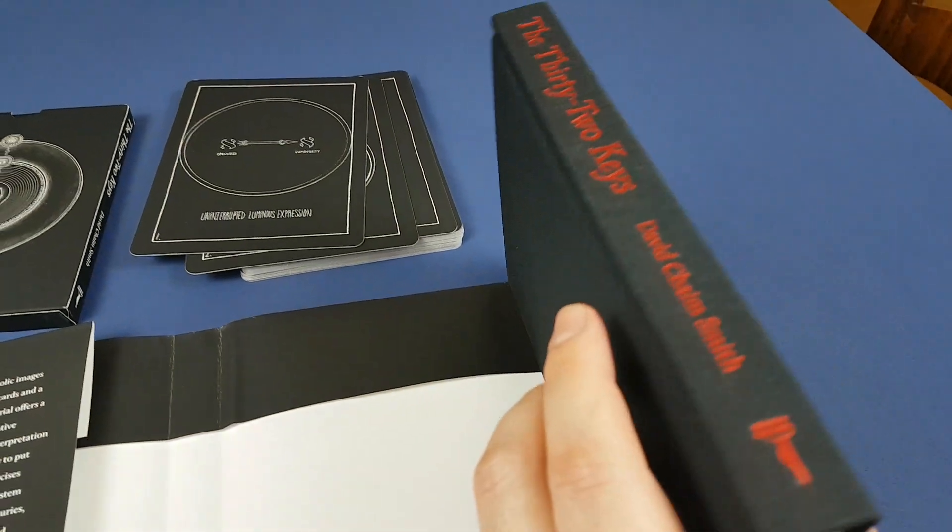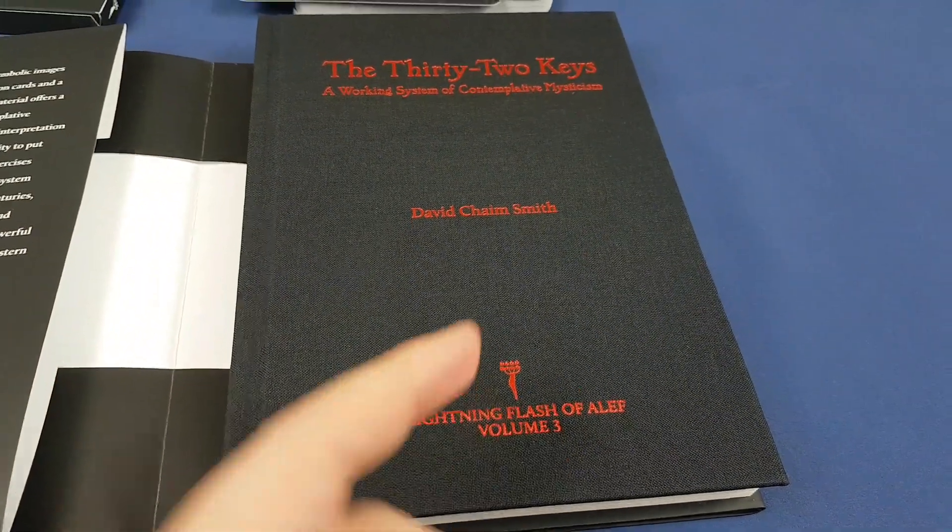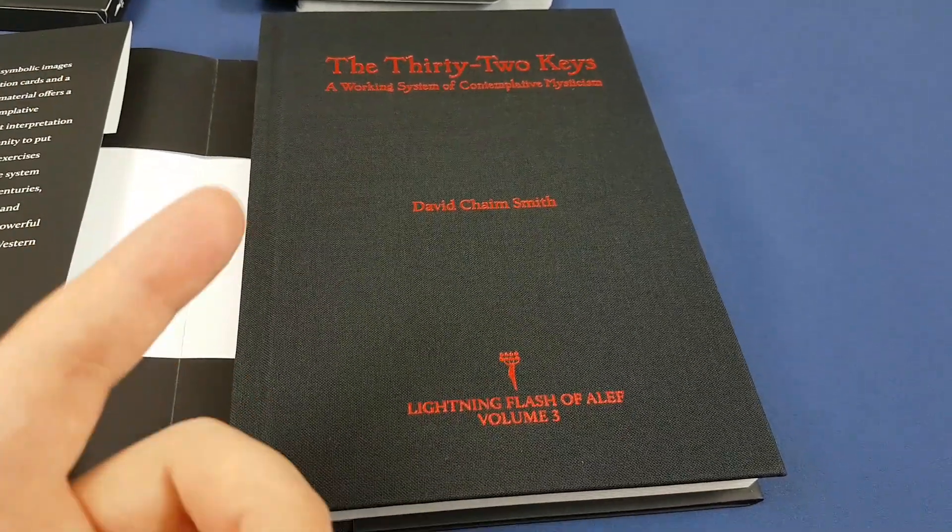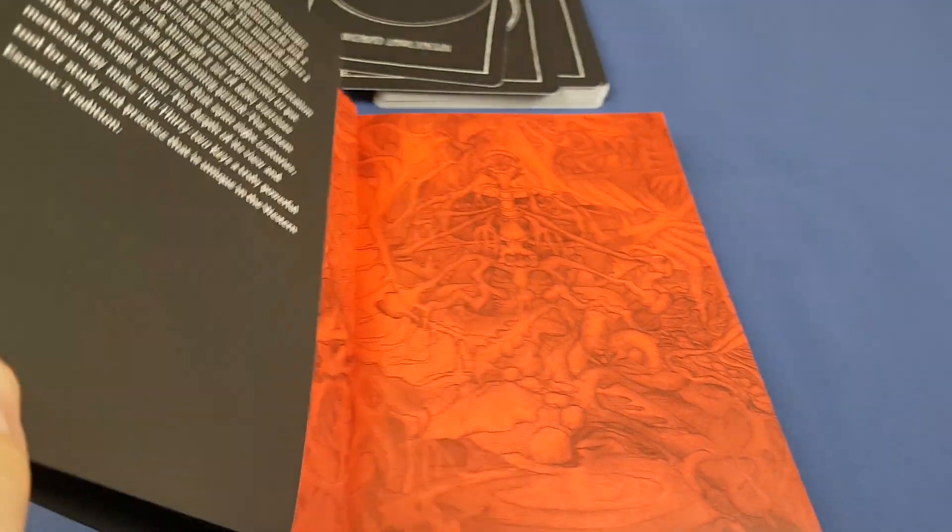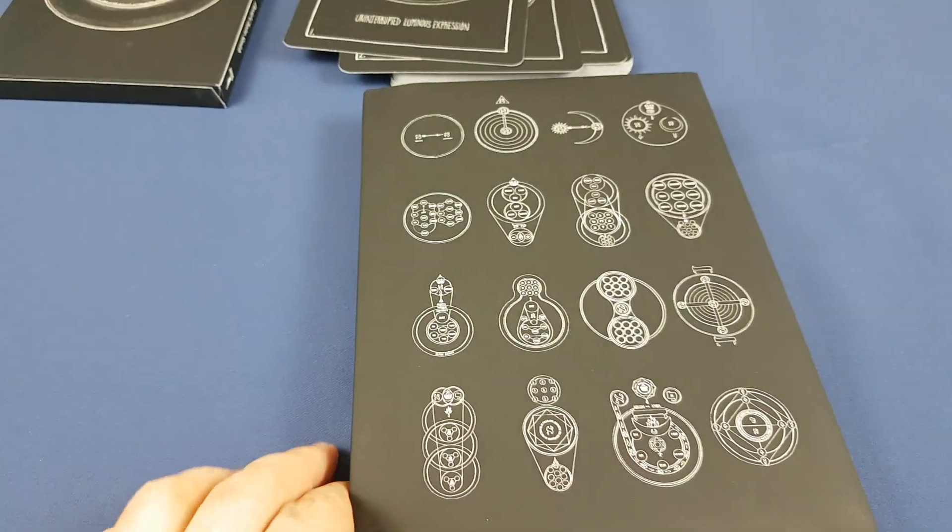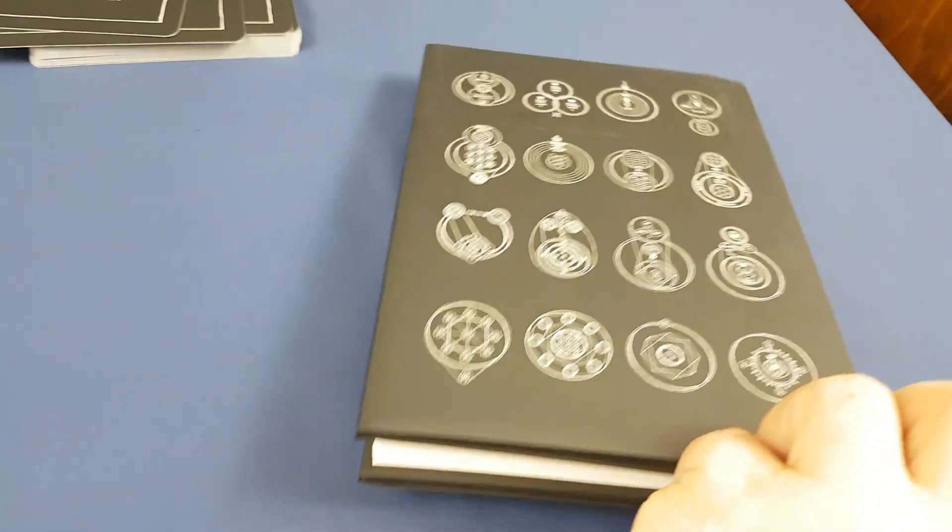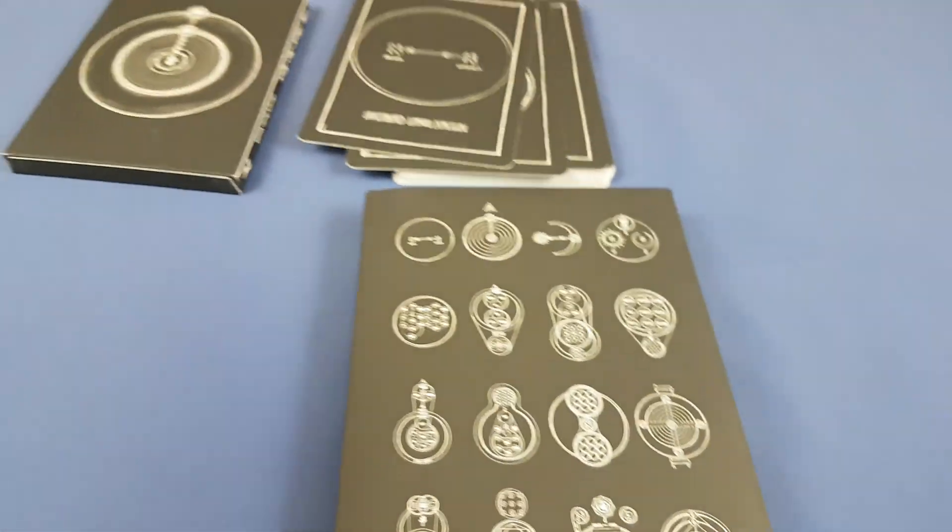This particular one is the third in a series of books. The series is called The Lightning Flash of Aleph. Book one is still in print. Book two is out of print altogether. But there's nothing on the cover to suggest that it is book number three, and so that really shouldn't bother anyone who has not got volumes one or two, just the way I haven't.